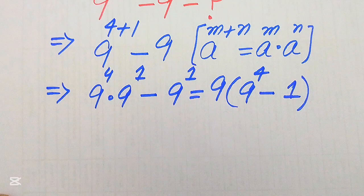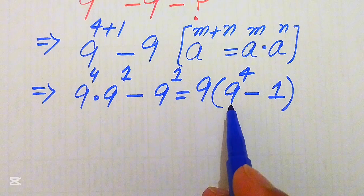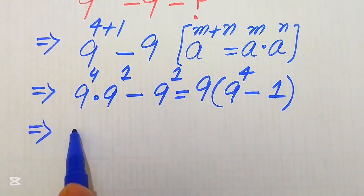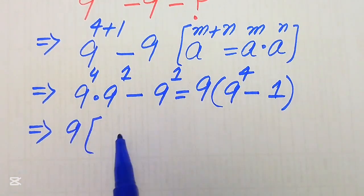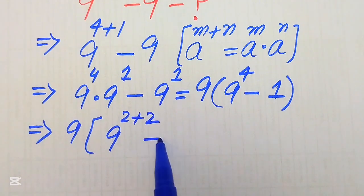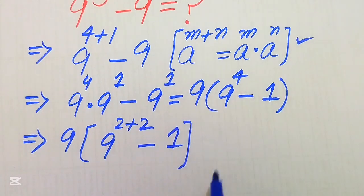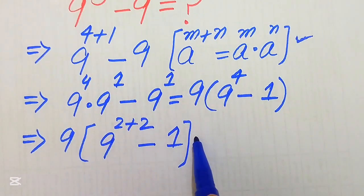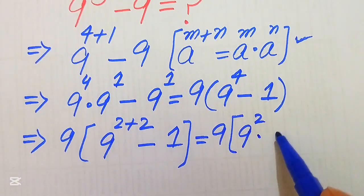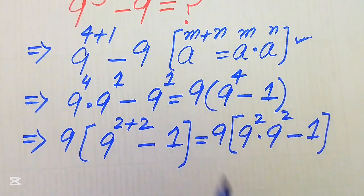Our first main goal is to find the value of 9 to the power of 4. We break 9 to the power of 4 by writing the exponent as 2 plus 2. Applying the exponent law again, we write it as 9 squared multiplied by 9 squared, subtracted by 1.